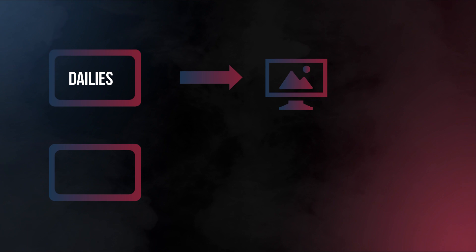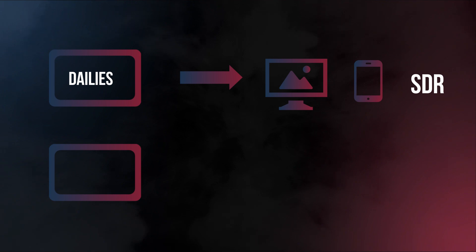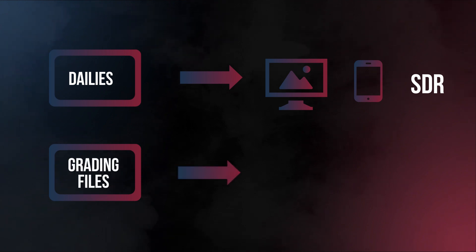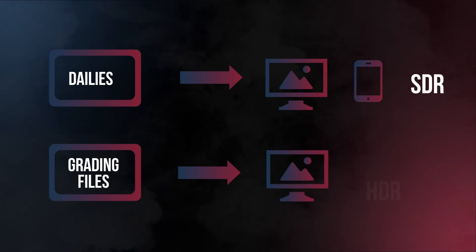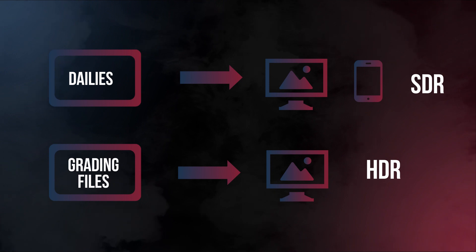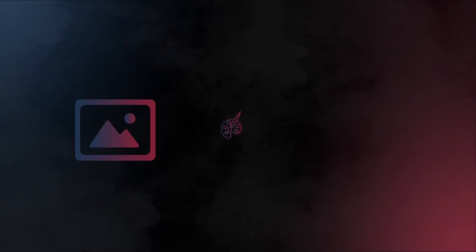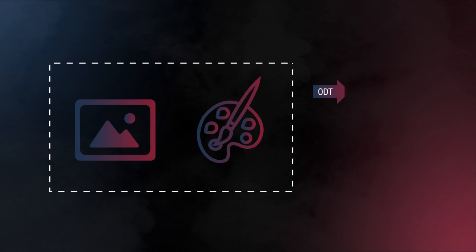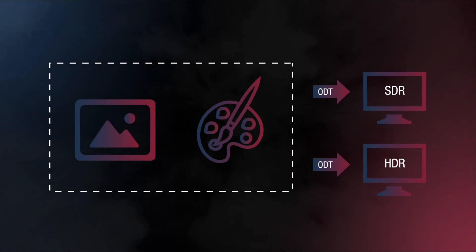Before exporting any display-referred file, we need to make sure we know the target display of the deliverable. Dailies during production and QuickTime reference even up to the final delivery are usually rendered out in SDR REC709, because production crews reviewing these files commonly have only SDR REC709 displays available. Oftentimes, for renders during color grading and depending on the device the creative is using to review, we may render QuickTime reference in HDR. This is one of the great advantages of working in a color-managed workflow like ACES — we can render deliverables to different display technologies just by selecting a different output transform while maintaining the creative intent of the grade.